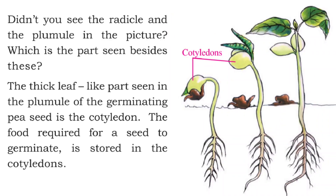Did you see the radicle and the plumule in the picture? The radicle is the root and the plumule is the stem. In the plumule of the germinating seed there is a thick leaf-like part called the cotyledon. The food required for a seed to germinate is stored in the cotyledon. So the function of the cotyledon is to store food for the germination of a seed.